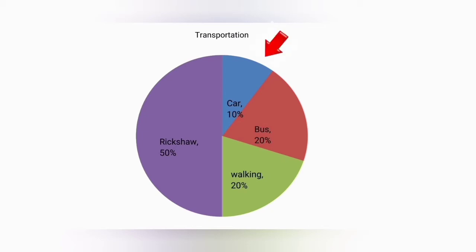The remaining ten percent of students come to school by car. From the view of the pie chart, it could be said that the school is located in an urban area, where rickshaws are used widely.